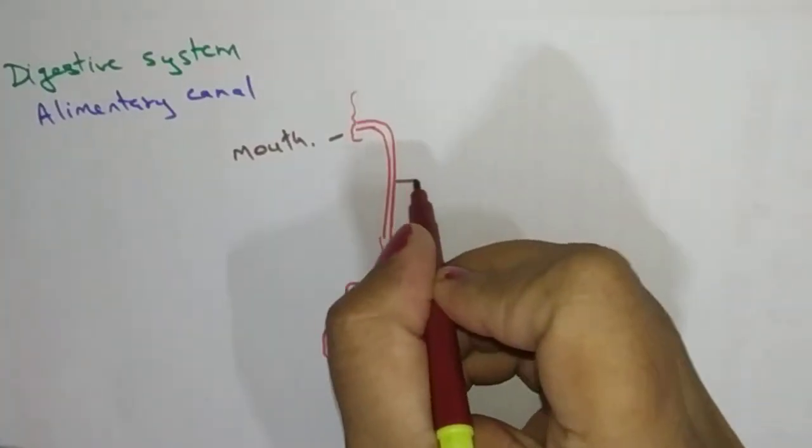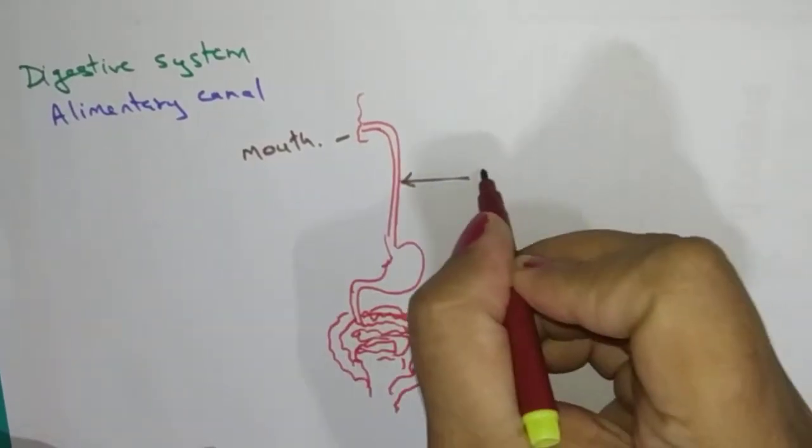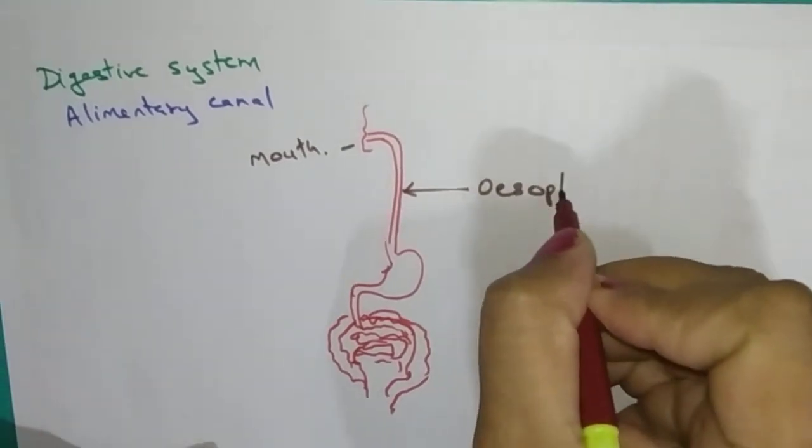After the mouth, this long pipe-like structure, that is called as esophagus.